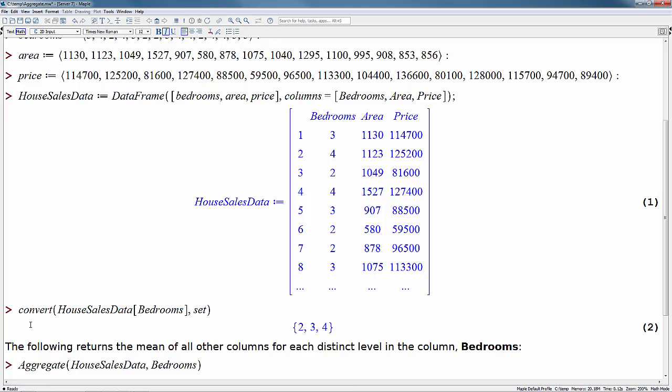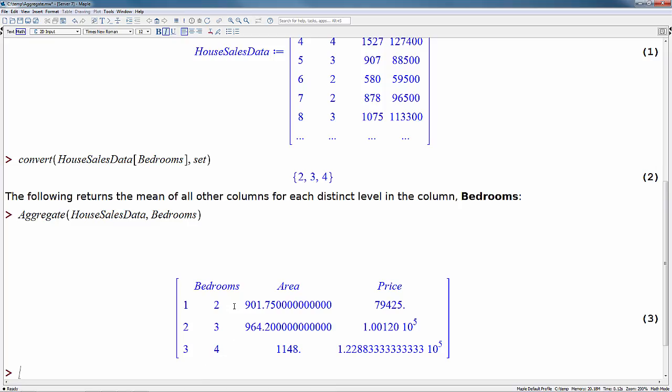The aggregate command is structured such that you first give it the data frame you want to look at, and then the column that you want to aggregate by. So in this case, if we use the aggregate command on house sales data of bedrooms, this will return a new data frame where we're now seeing the mean price as well as the mean area for two bedroom, three bedroom, and four bedroom apartments.